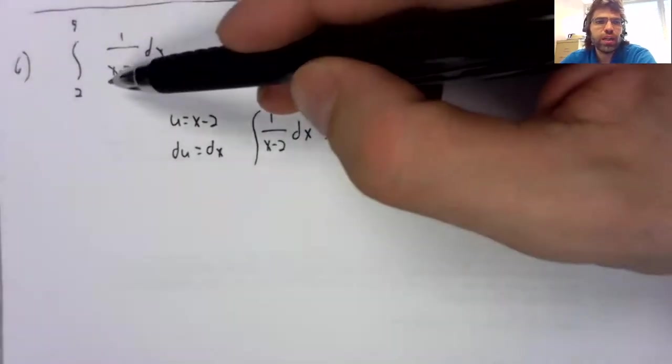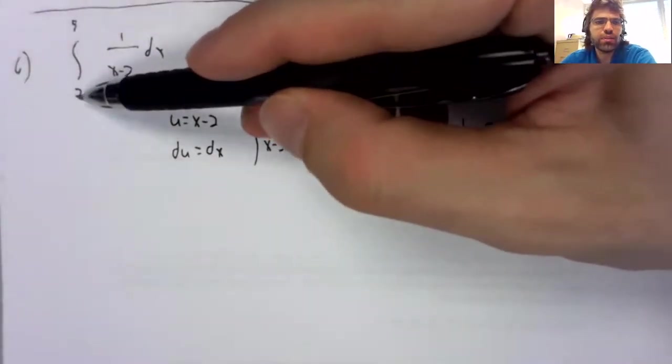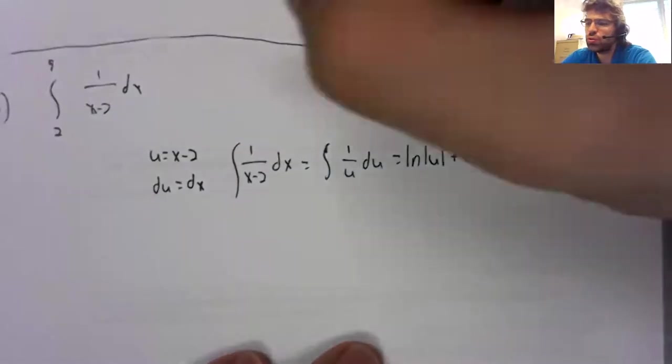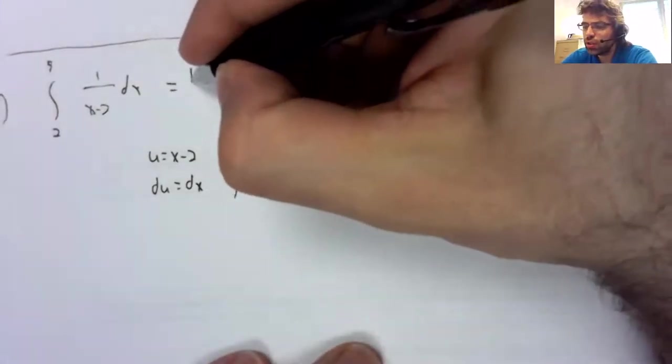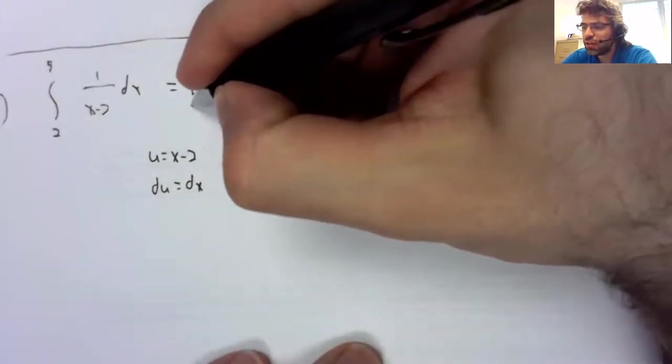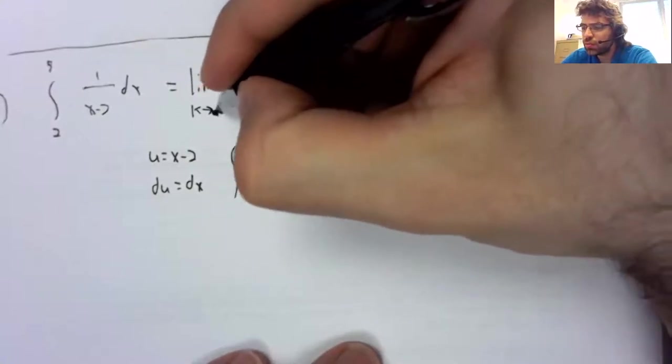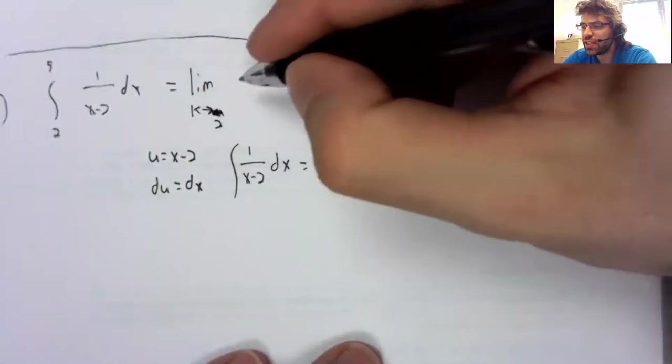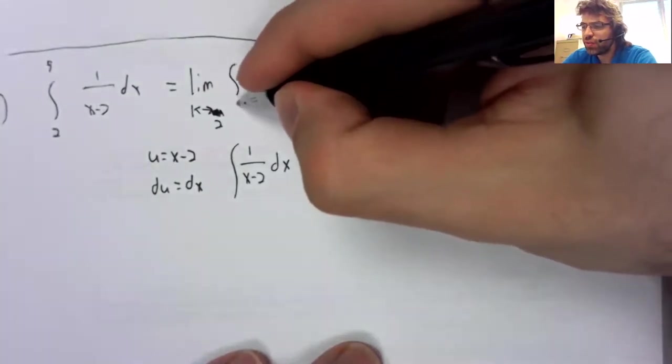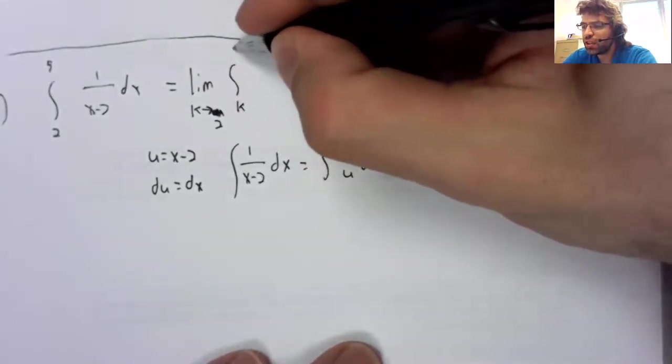However, we have a vertical asymptote at two. So we have to rewrite this as a limit.